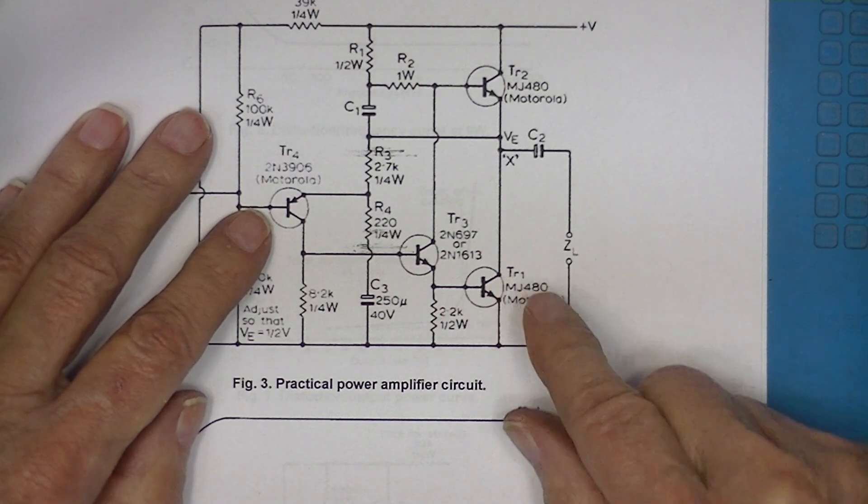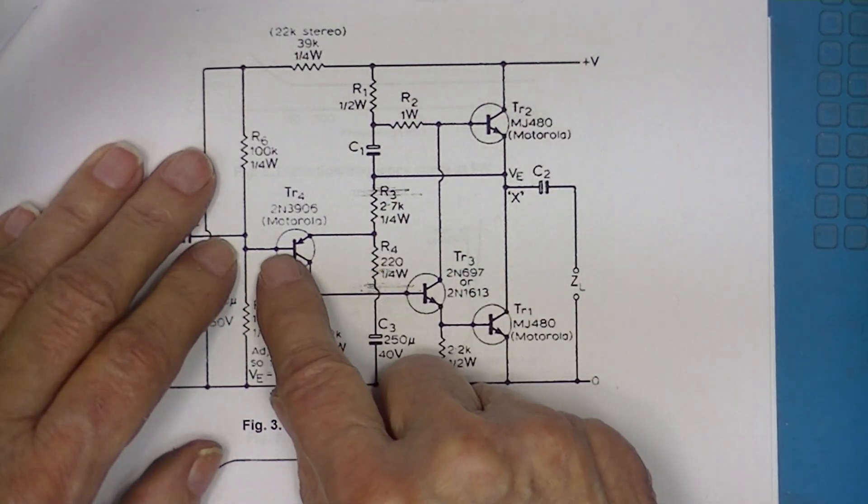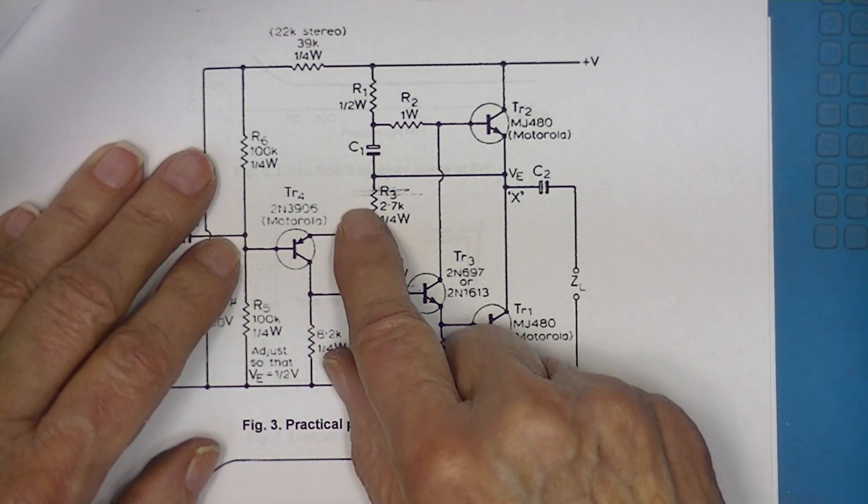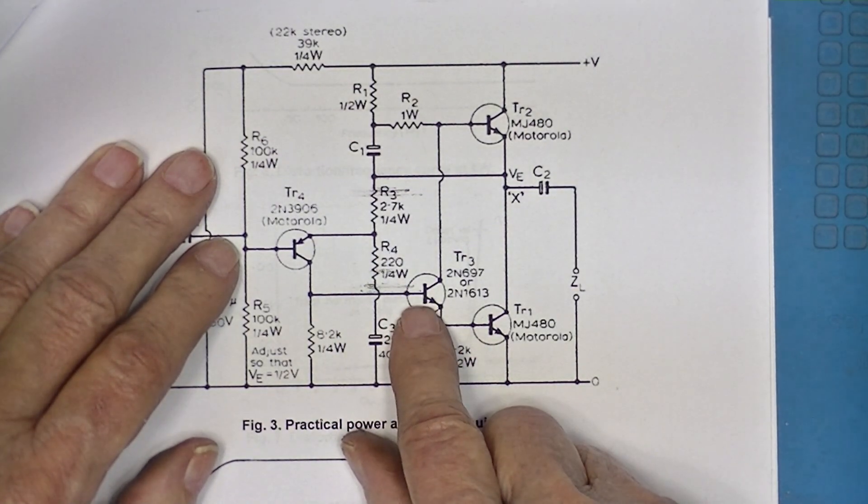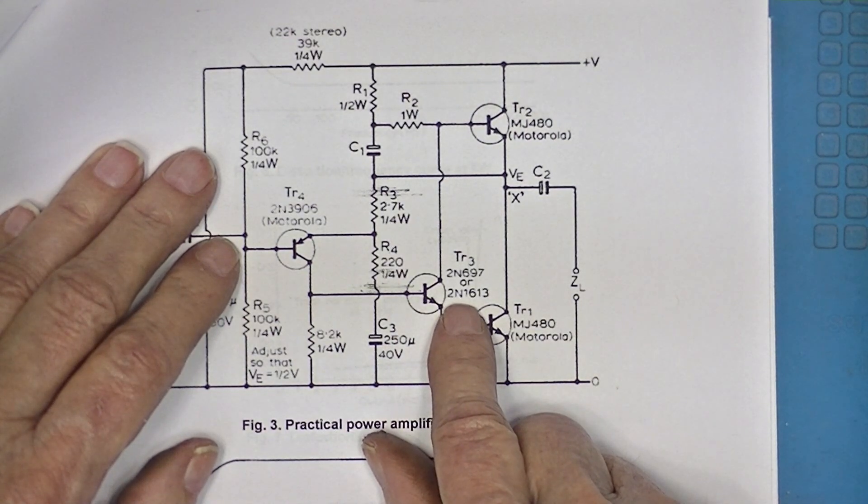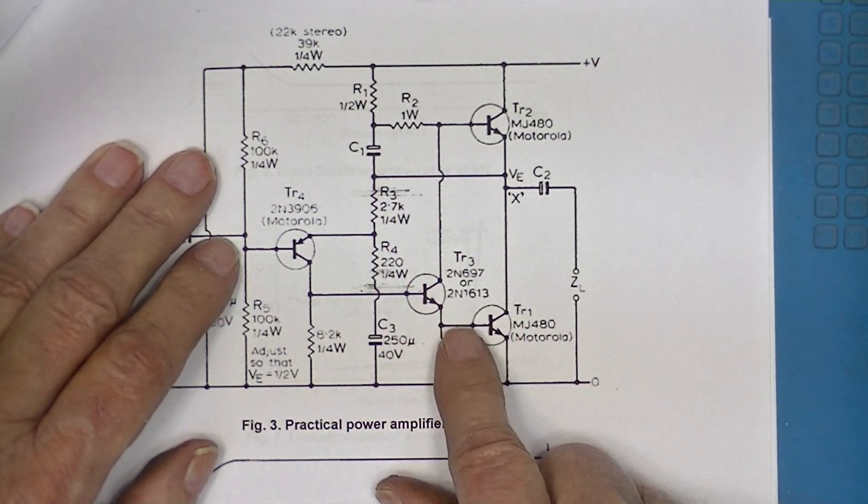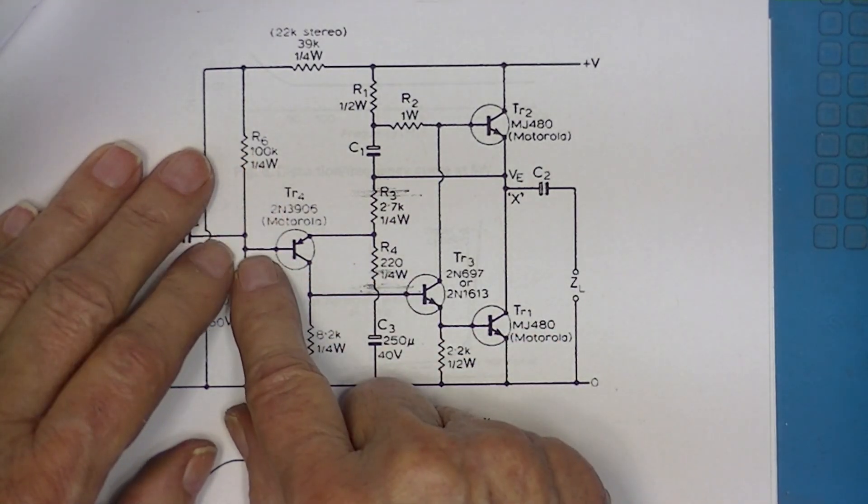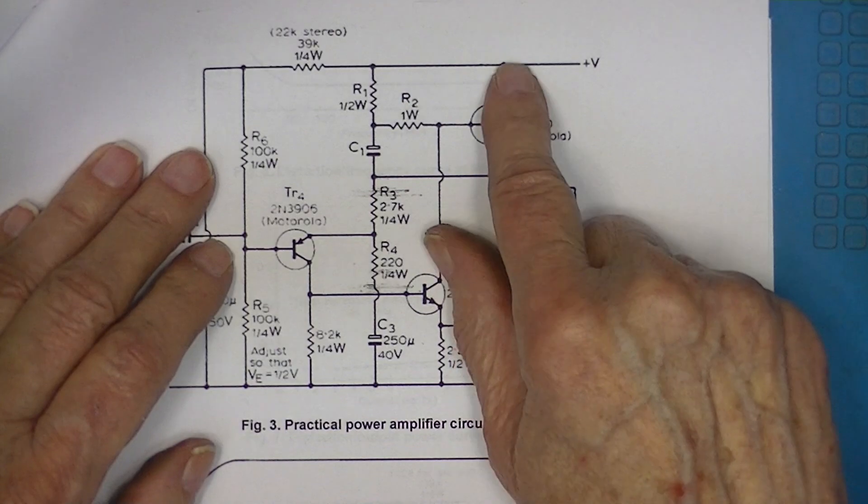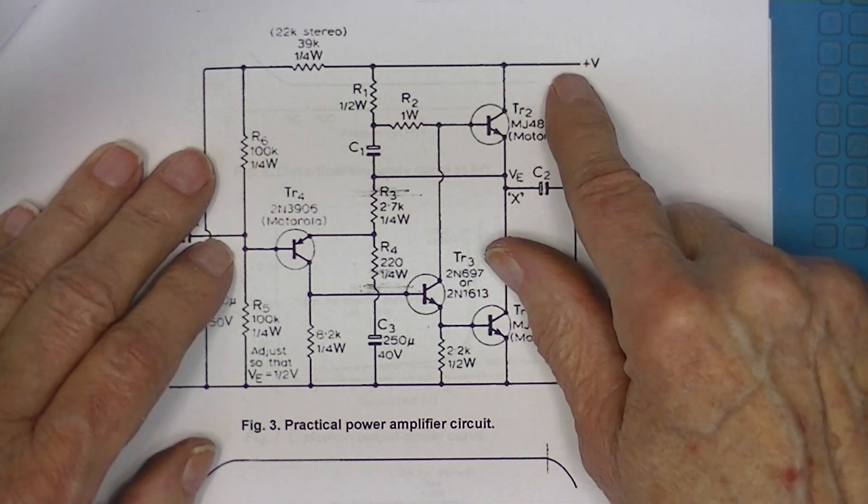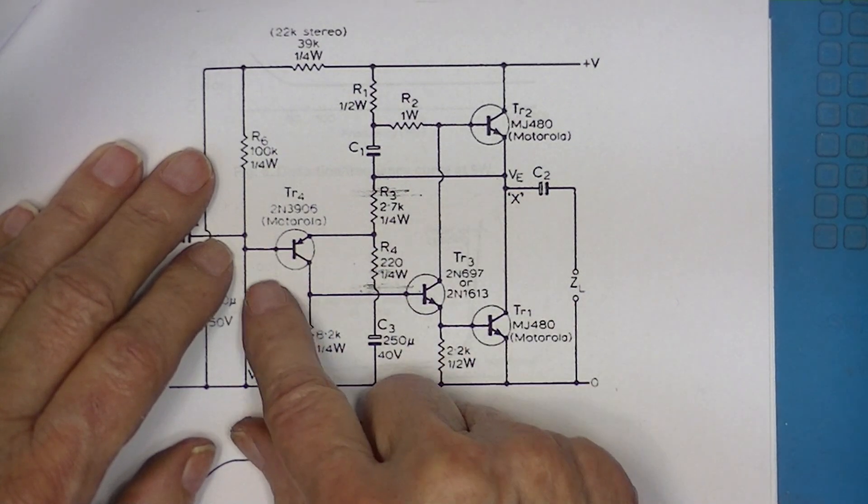The bias on this transistor is passed through inverted and non-inverted to this transistor. There's no gain essentially in this stage. The stage is one input and two outputs. It's important that the bias on this transistor makes point X equal to one-half of the power supply voltage.